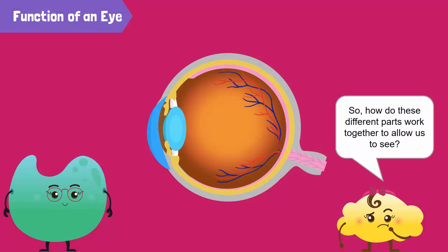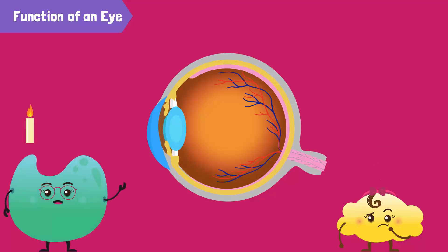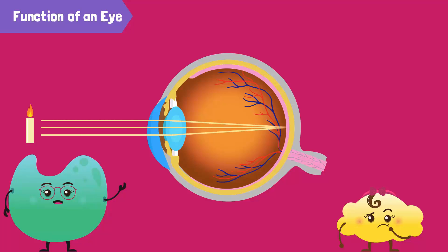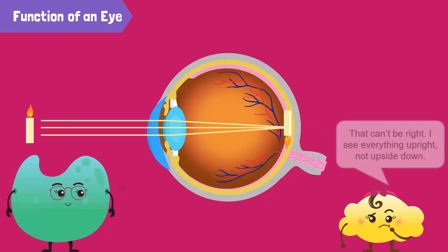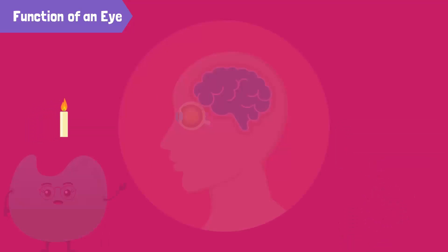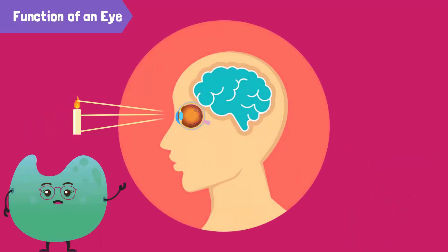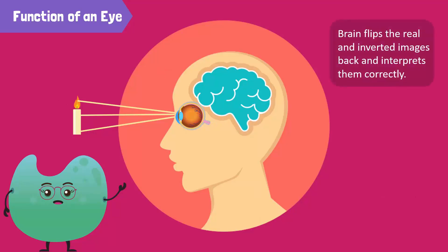So how do these different parts work together to allow us to see? The light coming from an object enters the eye through the iris and is focused by the lens, forming a real and inverted image on the retina. That can't be right — I see everything upright, not upside down! This is because the optic nerve carries these real and inverted images in the form of signals to the brain, and the brain flips them back and interprets them correctly.